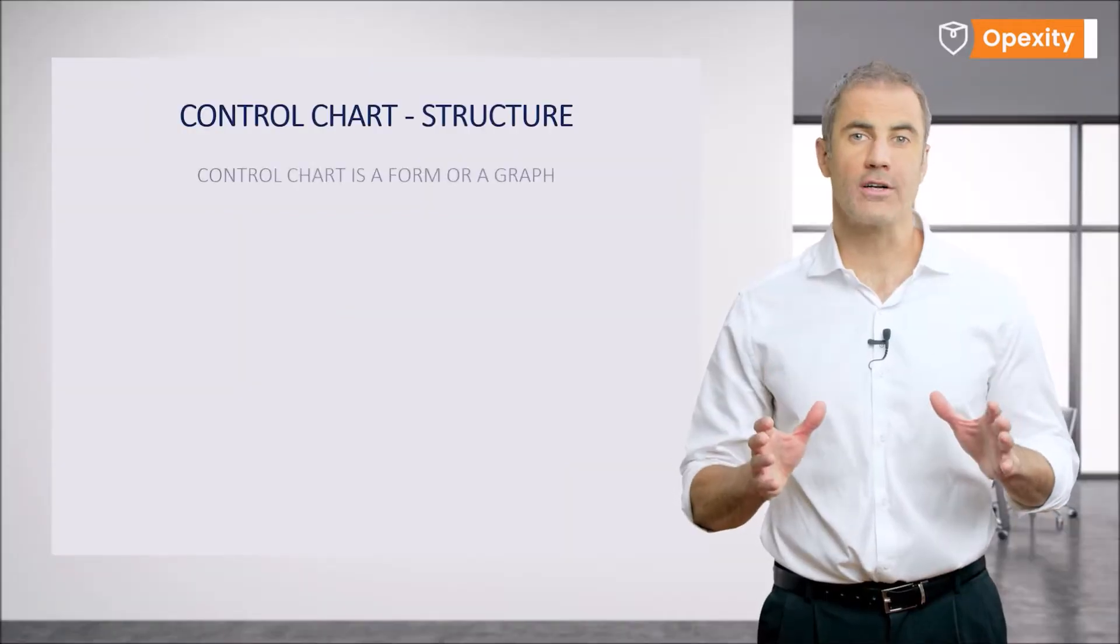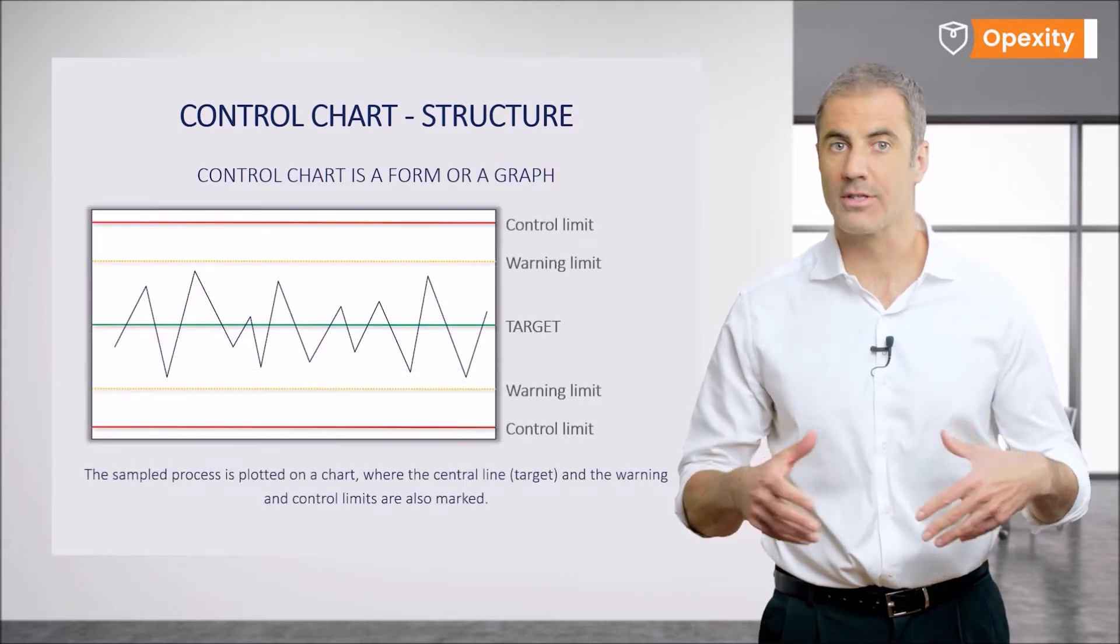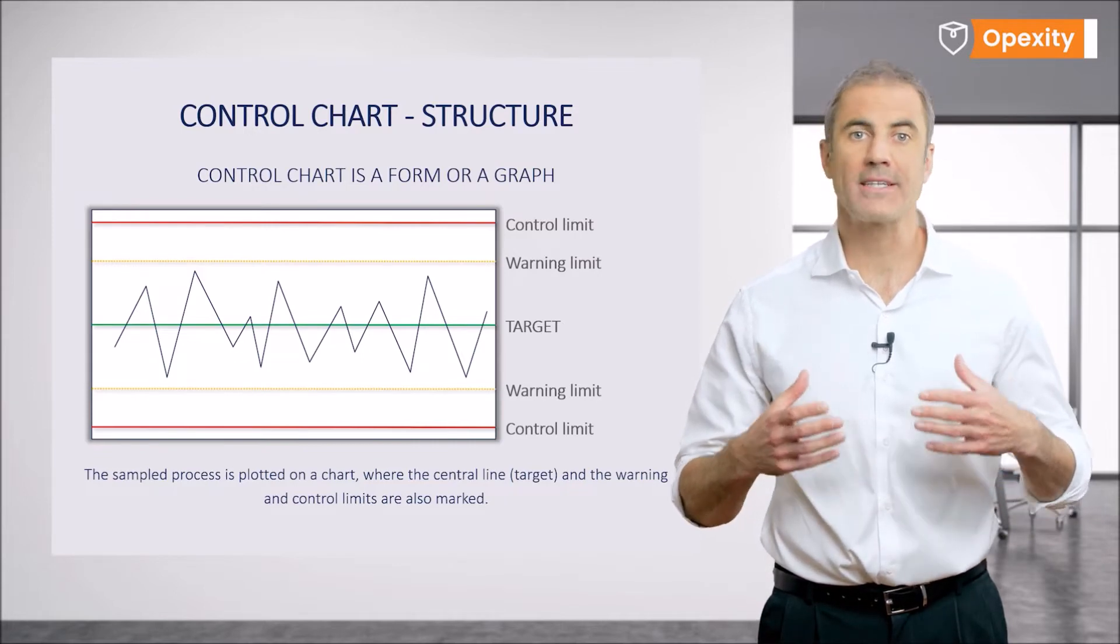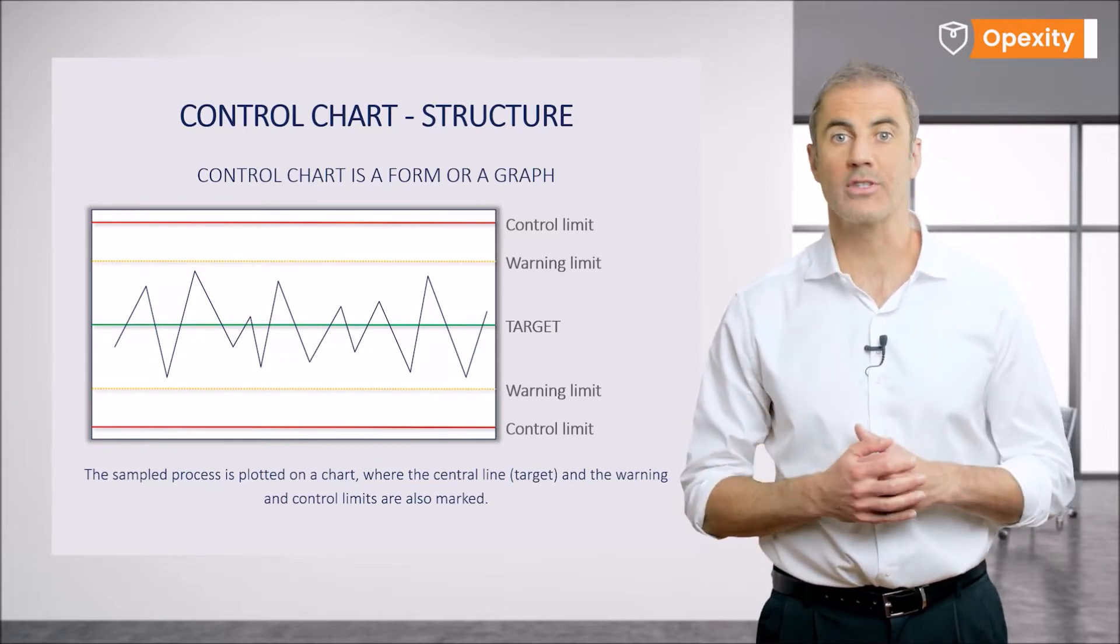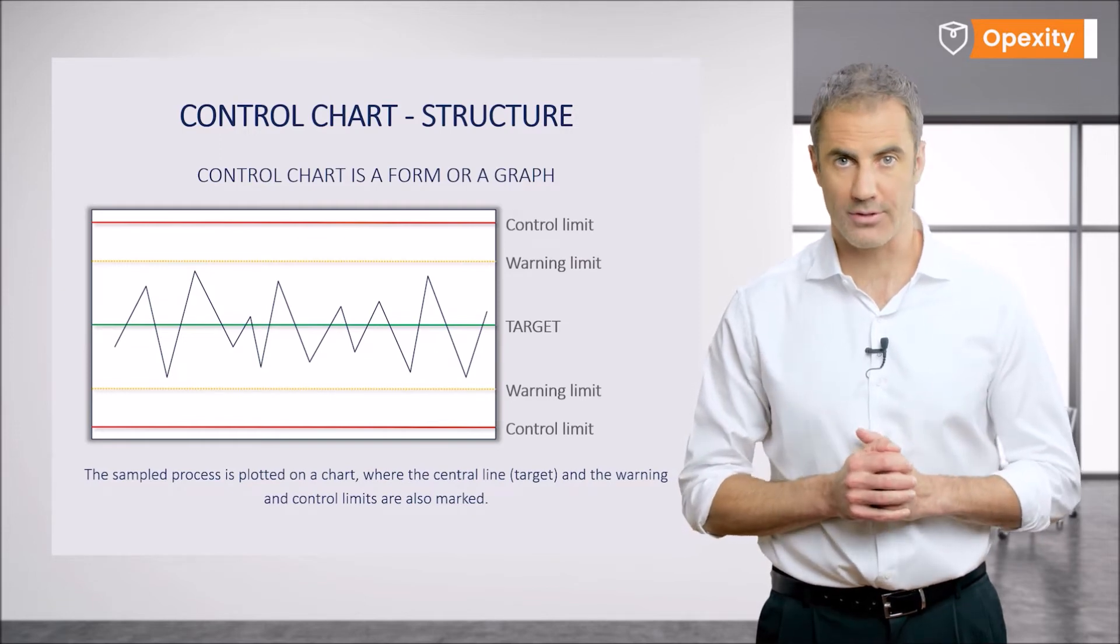The control chart is a form of a chart where measurement data taken on samples from the process will be placed. The graphic form of the chart makes it possible to bring awareness to the most important parameters, visualizing the status of a given process.